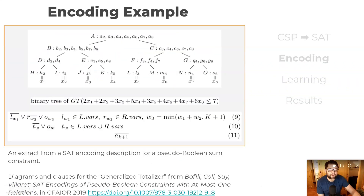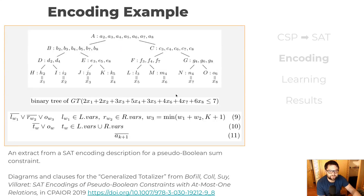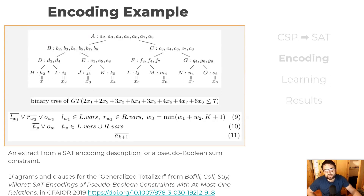In this paper, we are looking at encoding constraints into SAT. To give a flavor of how that could work, I'll give you an example: the generalized totalizer encoding. Here is our pseudo-Boolean constraint, and the weights in this case are 2, 2, 3, 5, and so on, and x1 through to x8 are our Boolean variables. In the totalizer tree structure, every term is given a leaf node, annotated with the weights of the corresponding terms.